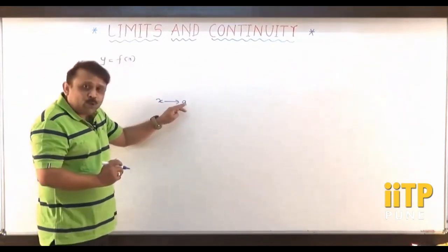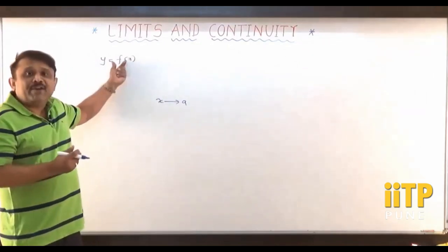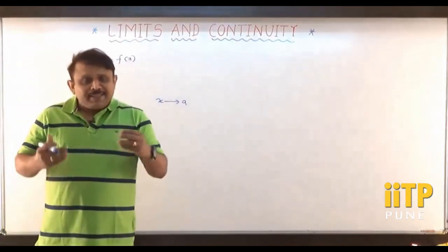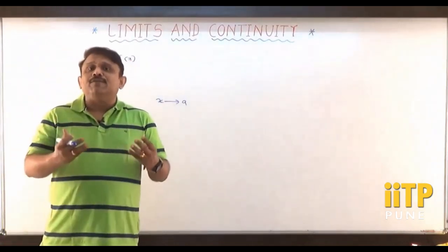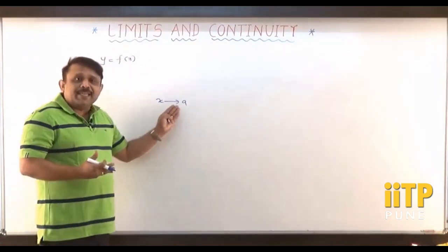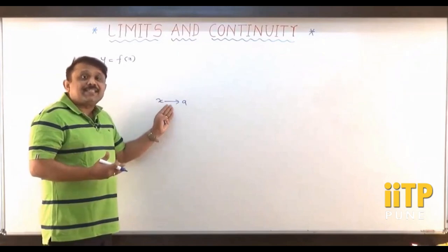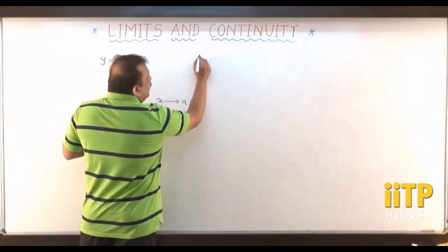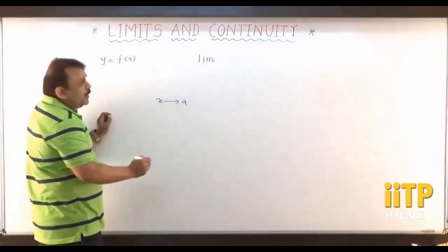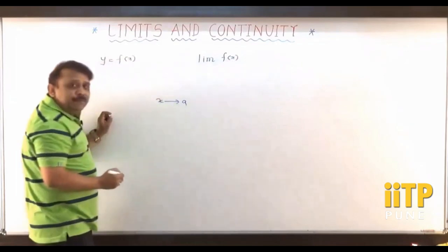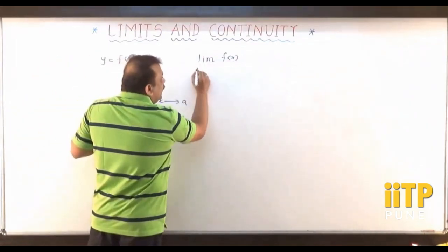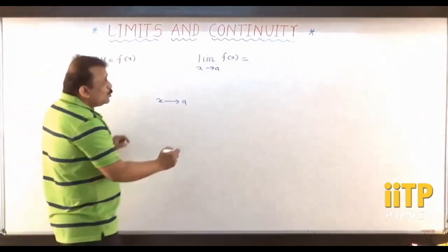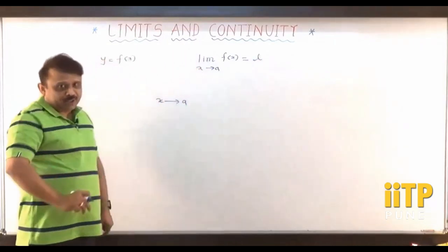So when x approaches a, to which number does f of x approach? If this function f of x approaches the number l, then we say that l is the limit of the function f of x whenever x is very close to a, or we say that x tends to a. We express that mathematically by writing before the function f of x the word lim, which means limit. Limit of this function as x tends to a equals l — so l becomes the limit of this function.